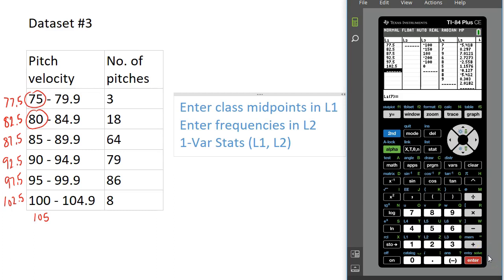Now in List 1, I have the midpoint of each class of pitch velocity. And just like in the previous example, I'm going to put the frequencies in List 2. Once we have the frequencies in List 2, I'm going to press Stat.